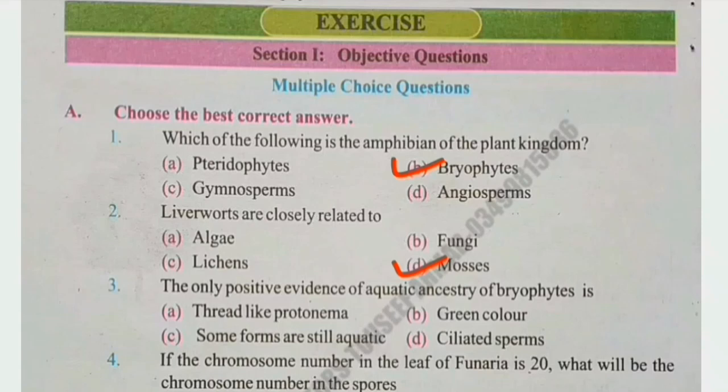Next MCQ: What is the only positive evidence of aquatic ancestry of bryophytes? Options: thread-like protonema, green color, some forms are still aquatic, ciliated sperm. The right answer is D, ciliated sperm.